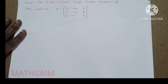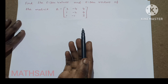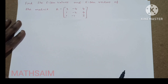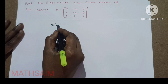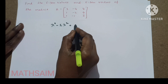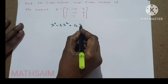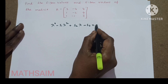In this problem on eigenvalues and eigenvectors, we will find out a shortcut method. So first, for a 3×3 matrix, to find the eigenvalue, we use the characteristic equation. It is: lambda cubed minus S1·lambda squared plus S2·lambda minus S3 equals 0.